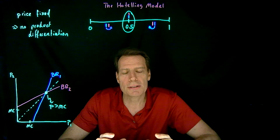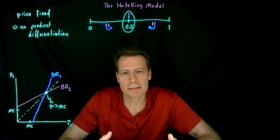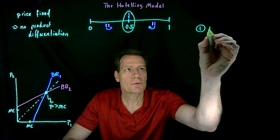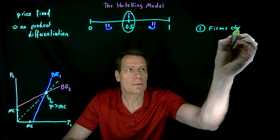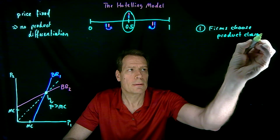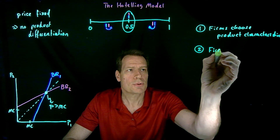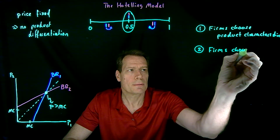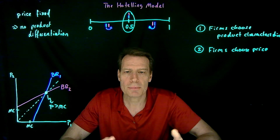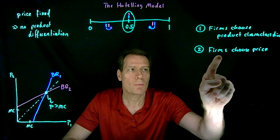So to really think about the strategic choice of product differentiation, we also have to embed that into an environment where firms are choosing price. The way to do that is to think of a two-stage game. In stage one, firms choose the product characteristic, and in stage two, firms choose price. You can think of firms playing two consecutive simultaneous-move games: in the first game they're choosing the product characteristic, knowing that they're next going to play a game where they're going to choose price.